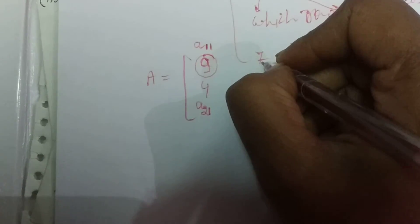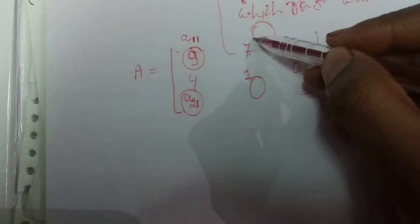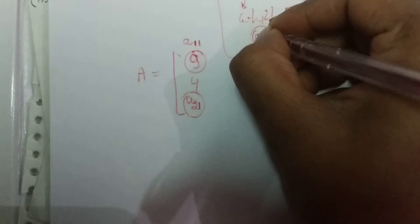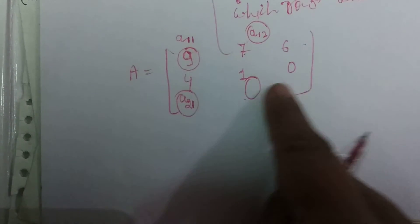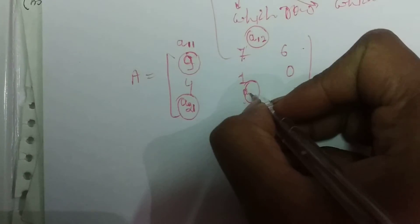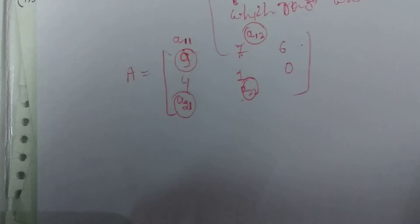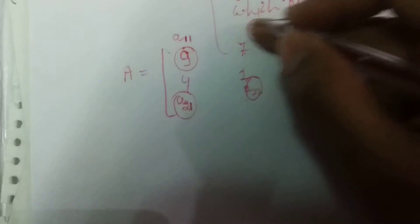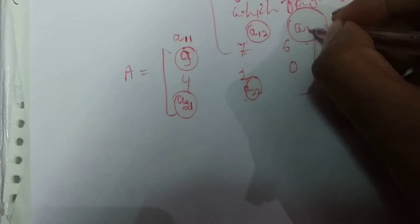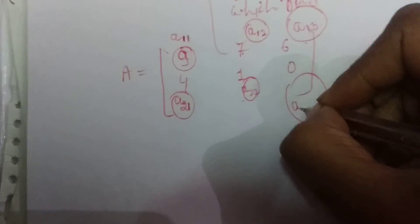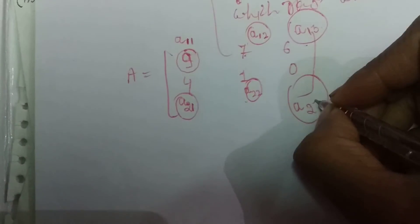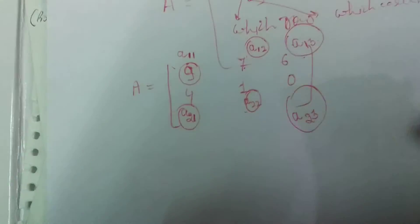If I write 7: 7 is in the 1st row and which column? The second column — so it is A 1,2. Then A 2,2 is the second row, second column. And A 1,3 is first row, third column. A 2,3 is second row, third column. Yeh hamare elements ke naam hote hain.